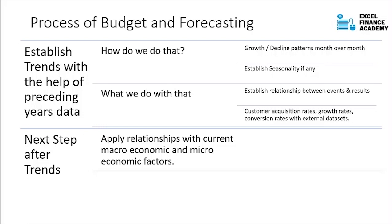By looking at global macroeconomic data, you can understand where to focus. For example, if you are an e-commerce market, you should consider promoting your products to people working in Telecom or going into insurance, because their jobs and spending power will increase. You can identify your potential markets for the future, then apply microeconomic data specific to your industry and your own particular company.